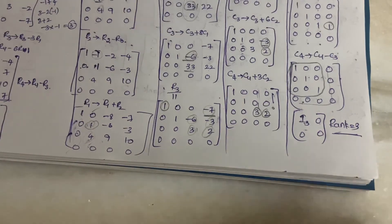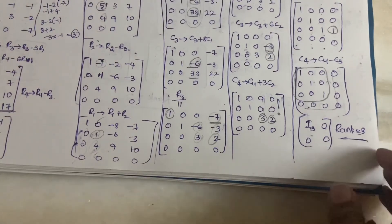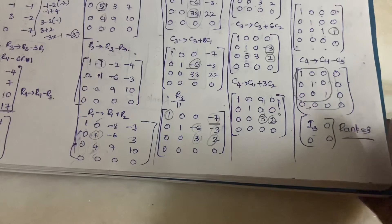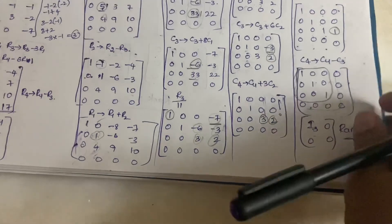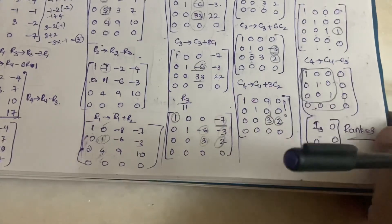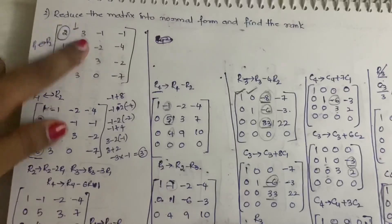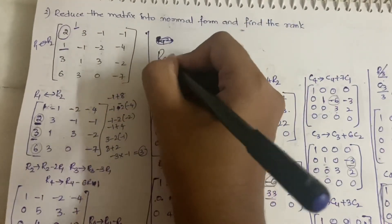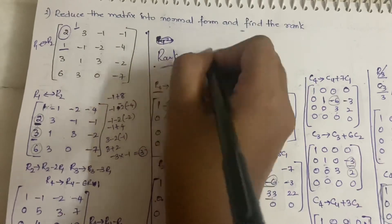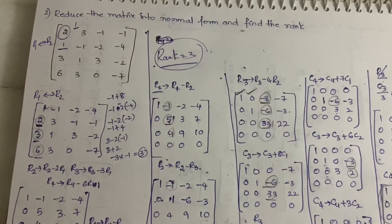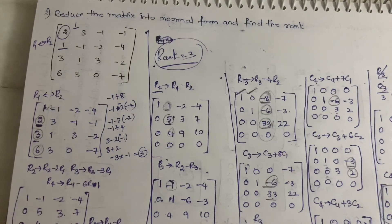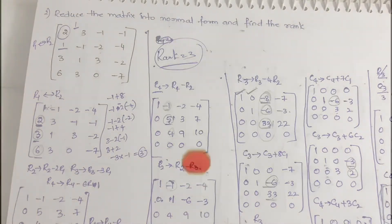The rank is equal to 3. This is how you calculate the rank using the normal form — you make all the elements zeros in order to get the identity matrix. This was a long problem but this is how it works. I'll do one more example in the next video. Thanks for watching patiently — stay tuned to my channel and let me know any suggestions in the comments.